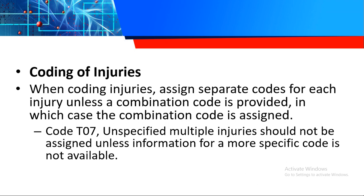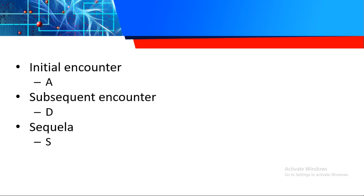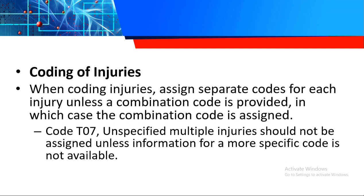Let's start with the guidelines for coding of injuries. The first guideline — put a star on letter B because they usually ask these questions in the actual exam. When coding injuries, assign separate codes for each injury unless a combination code is provided, in which case the combination code is assigned. Do not use unspecified multiple injuries — that is very vague. Our goal for ICD-10-CM is to always code to the highest level of specificity, so you are not allowed to use T07.